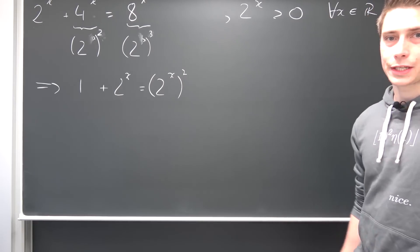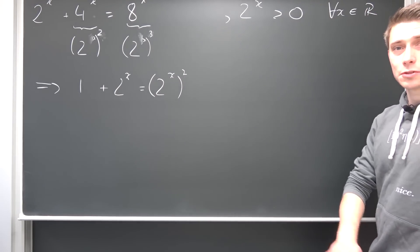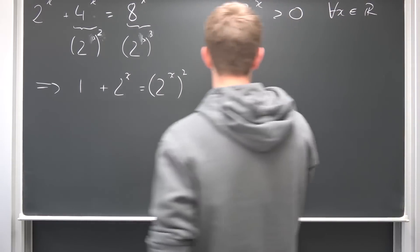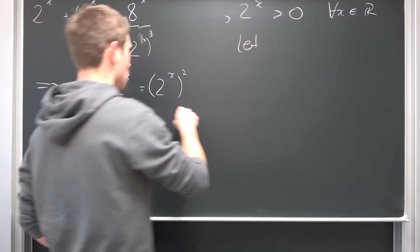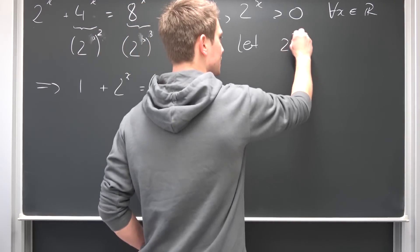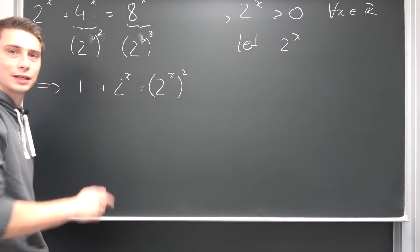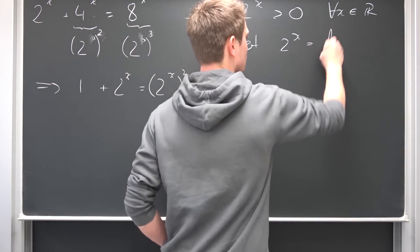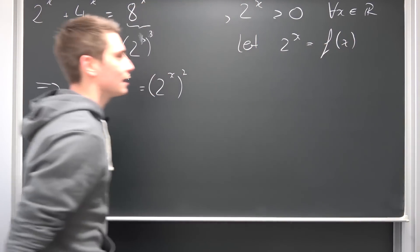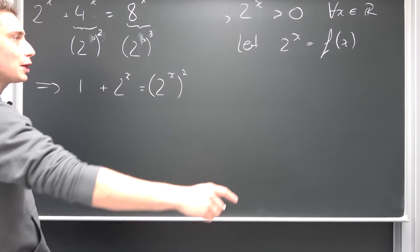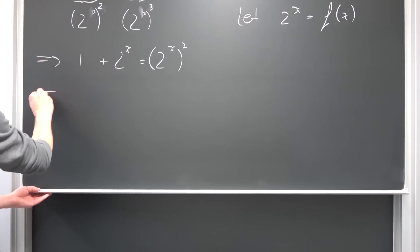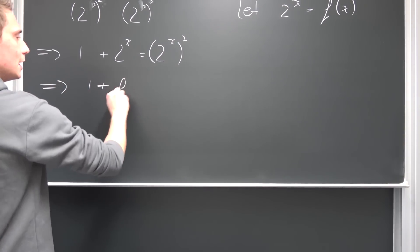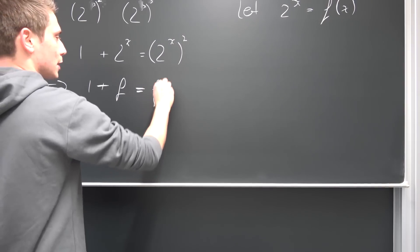Now maybe you can already see where this is going, but I would like to do a little substitution just to clarify things a bit more. Let our 2 to the x power that we have right here, so basically we have a polynomial in our 2 to the x power, let us substitute it by some function f of x. Let's just call it f, and now we can just plug it into here, meaning we are going to end up with 1 plus f being equal to f squared.